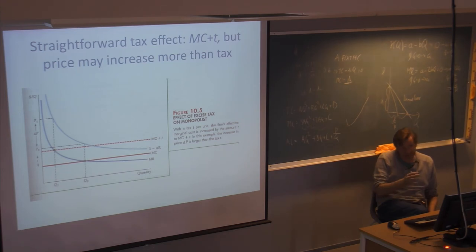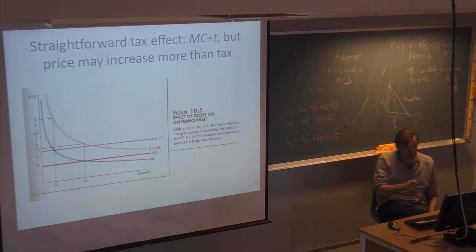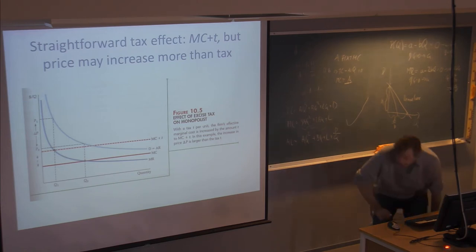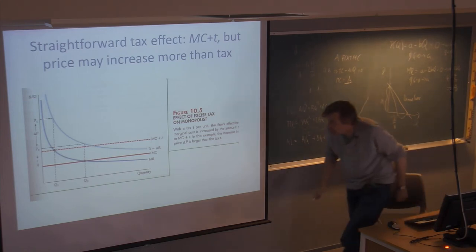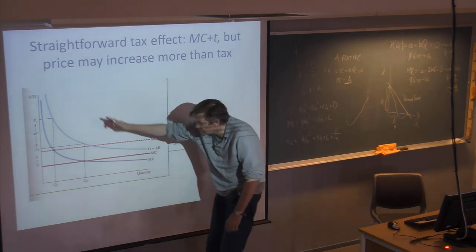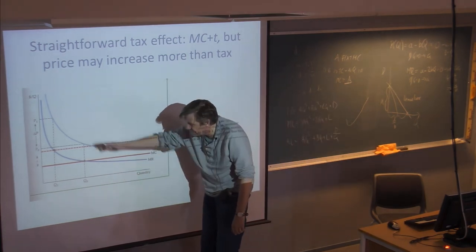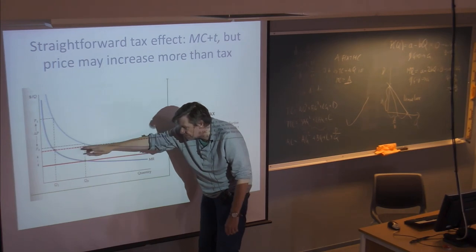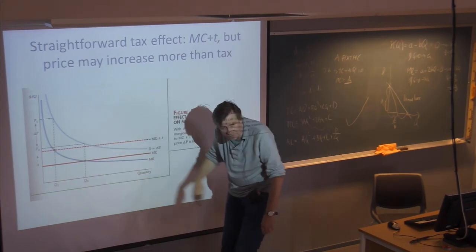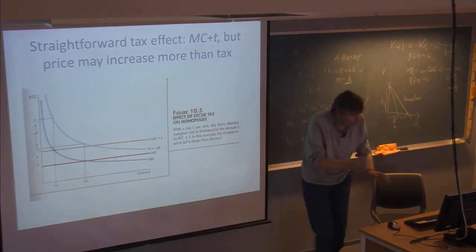The tax has an effect of making monopoly solutions even worse — by lifting the marginal cost you get a somewhat stronger monopoly situation. The rationing of quantity is bigger and the price effect exceeds the tax effect. This depends on the shape of the curves. In the previous example the demand curve and marginal revenue were linear; in this case we have nonlinear marginal revenue but a constant marginal cost.